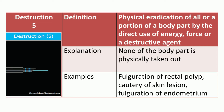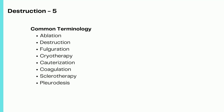Remember, none of the body part is physically taken out as part of destruction. Common terminology associated with the destruction root operation includes ablation, destruction, fulguration, cryotherapy, cauterization, coagulation, sclerotherapy, and pleurodesis. One important point to remember: for all destruction procedures there is usually no pathology report because the tissue is completely destroyed. Only in very rare occasions where tissue remains in an instrument may it be sent for pathology testing.